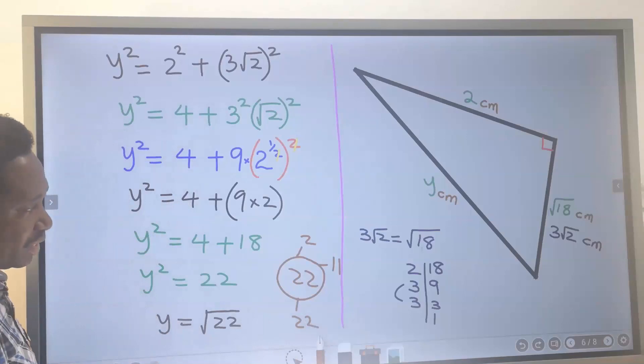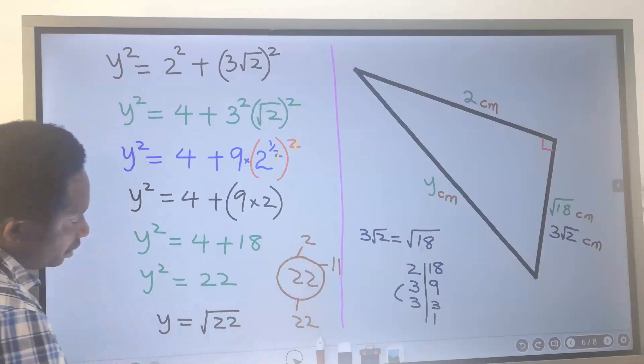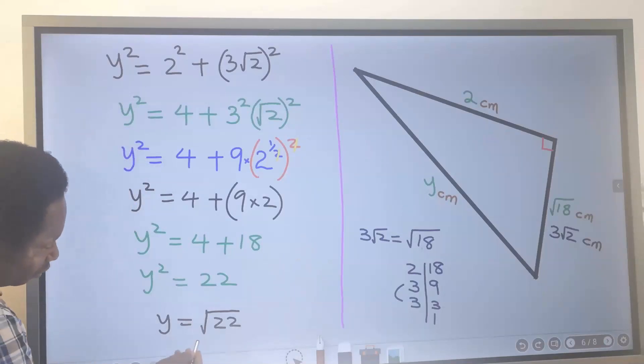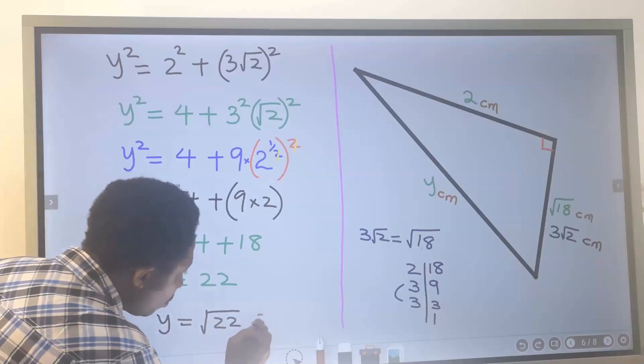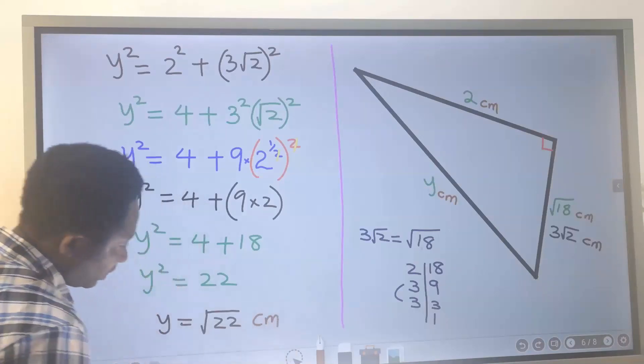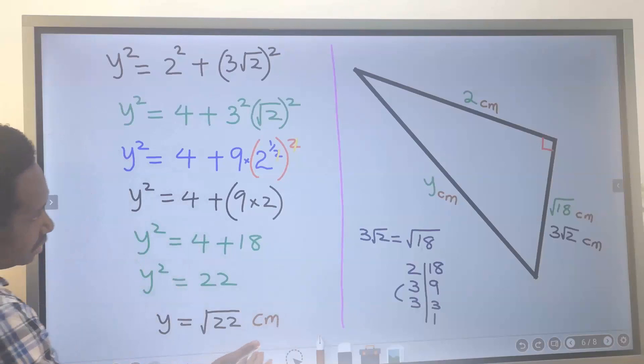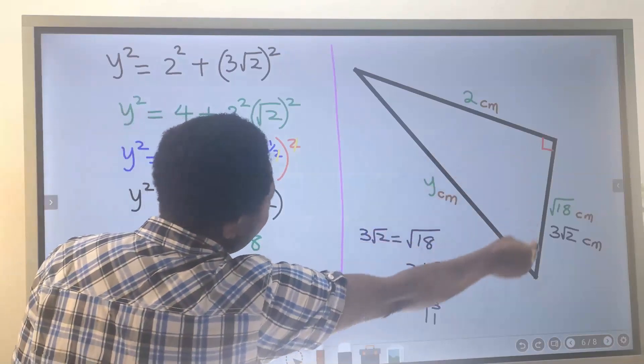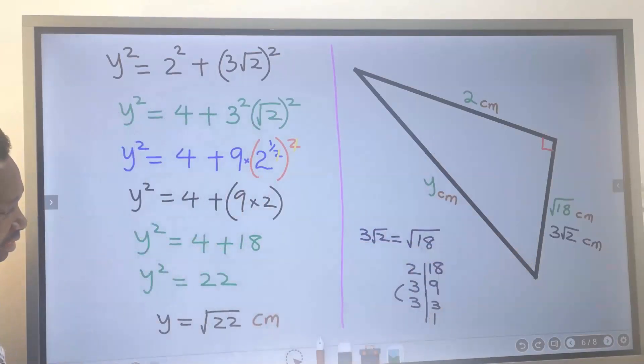There are no two combinations that will give us 22 here. The square root of 22 cannot be broken down any further in surd form, and we're going to leave our answer as √22 centimeters because we have centimeters as the length. We have found the value of our y, leaving our answer in surd form.